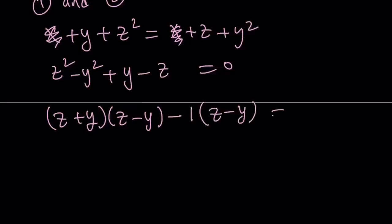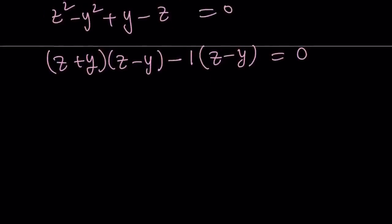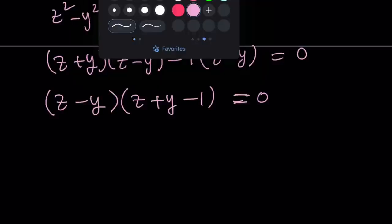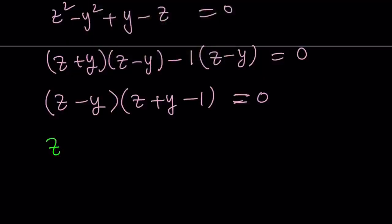And now we have a common factor as z minus y. Let's take it out. And now we get z plus y minus one equals zero. Now, this has two conclusions. This means either z equals y or z plus y equals one.